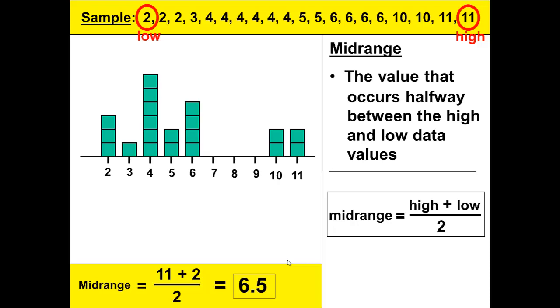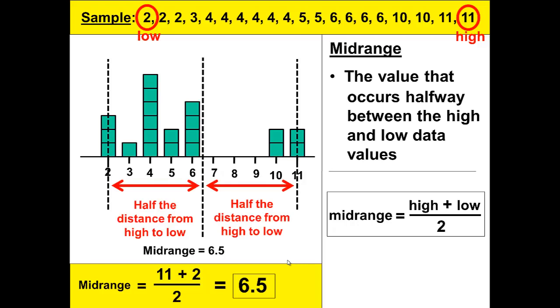Now for a graphical picture of that. Keep in mind that when we are looking for the halfway value between our low and high points—here are our high and low points. Now to mark halfway between them, which would be 6.5, the 6.5 is equal distance to the ends of our data. Half the distance from high to low, half the distance from high to low.